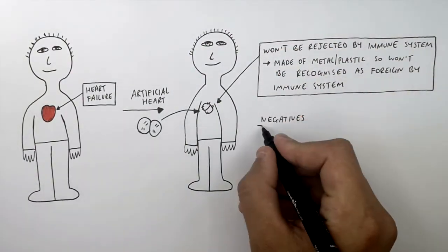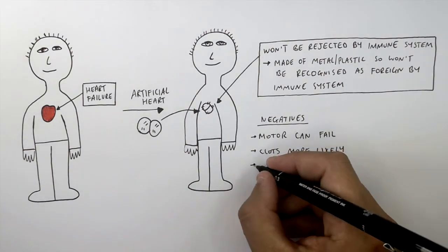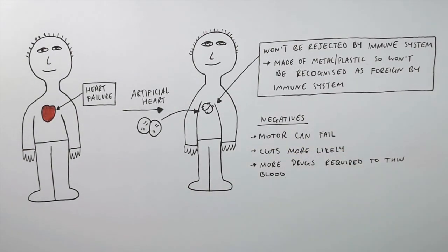So there are negatives. The motor can fail. Clots are more likely. And more drugs are required to thin the blood. So you need to take drugs that thin the blood.